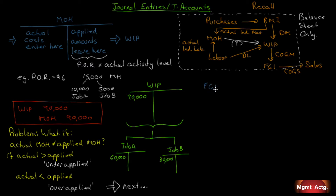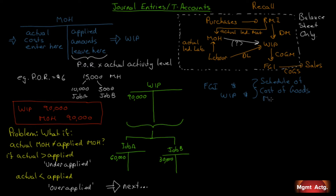When it leaves work in process, it enters finished goods. So, finished goods inventory increases, work in process decreases. That's simple enough. And we get this number from the schedule of cost of goods manufactured. That's why we do a schedule of cost of goods manufactured — to get the number that leaves work in process and enters finished goods.